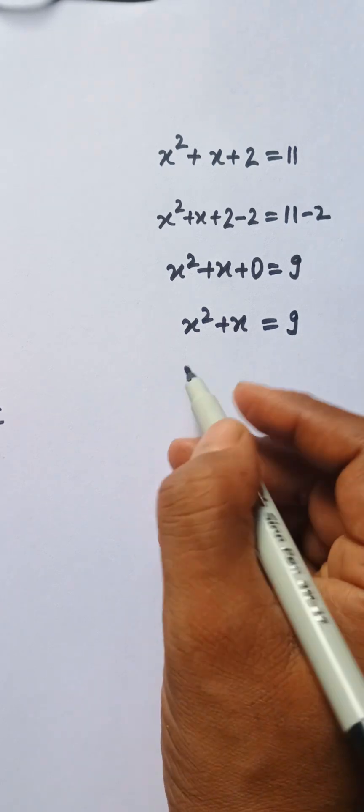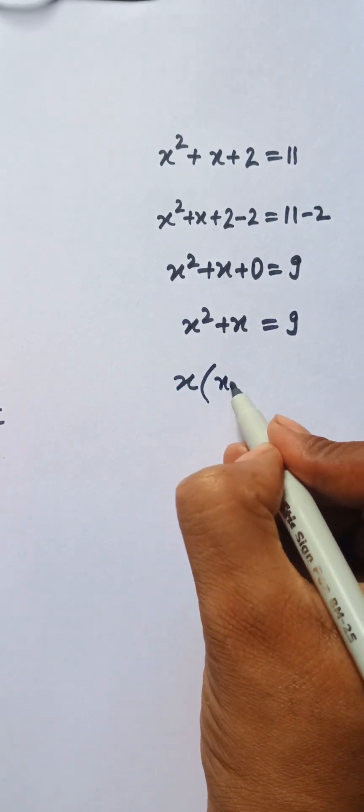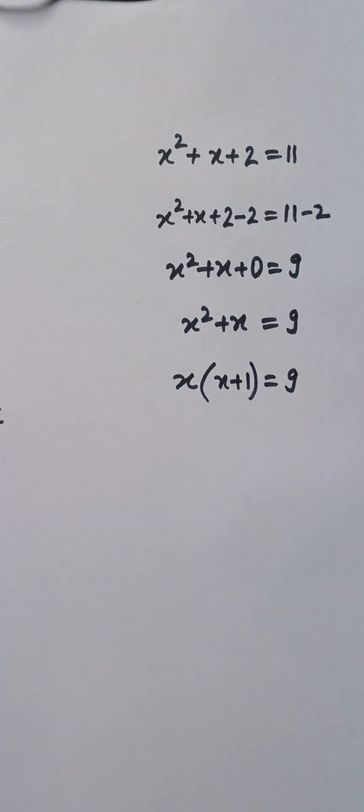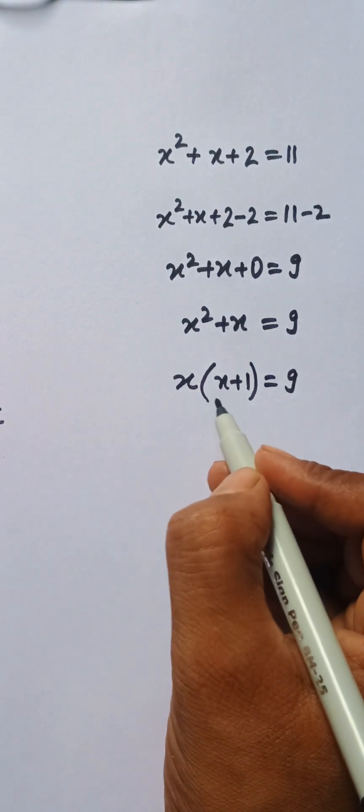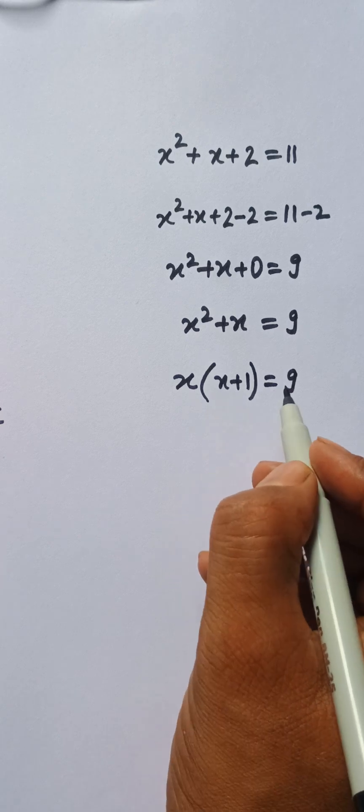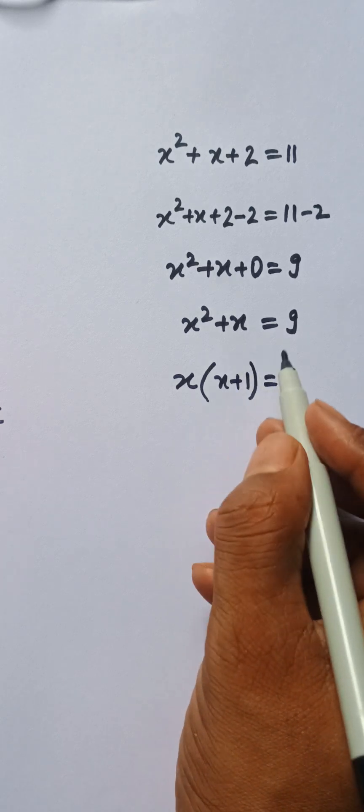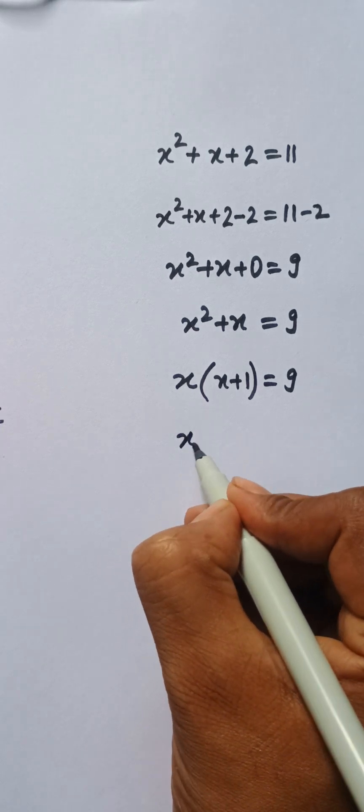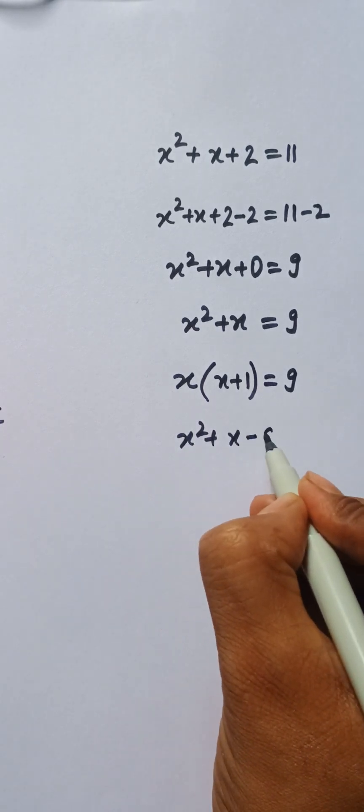We have x squared plus x equals 9. I need to take common, so x times (x plus 1) equals 9. Okay, I can use the quadratic formula. We can say that this one is in this format: x squared plus x minus 9 equals 0.